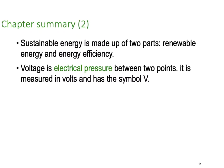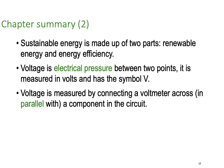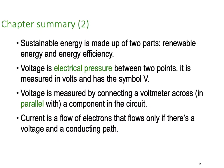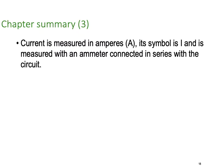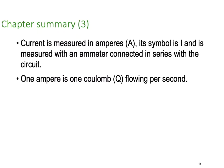Voltage is the electrical pressure between two points. It is measured in volts and its symbol is V. Voltage is measured by connecting a voltmeter across or in parallel with the component in the circuit. You must put your voltmeter in parallel. Current is the flow of electrons that flows only if there is a voltage and a connecting path. Current is measured in amperes. We use letter A, and its symbol is capital I. It's measured with an ammeter connected in series. One amp is one coulomb flowing for one second. If you have one amp and it flows for one second, you have created one coulomb of energy.